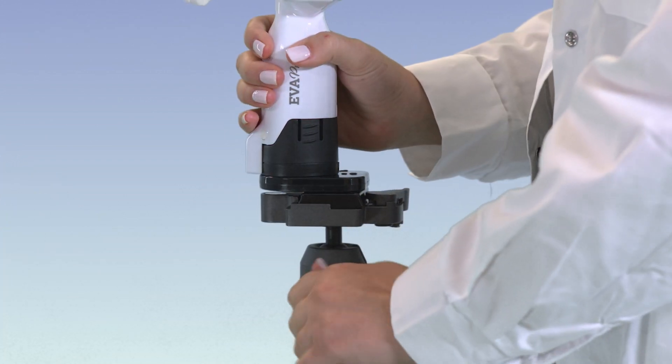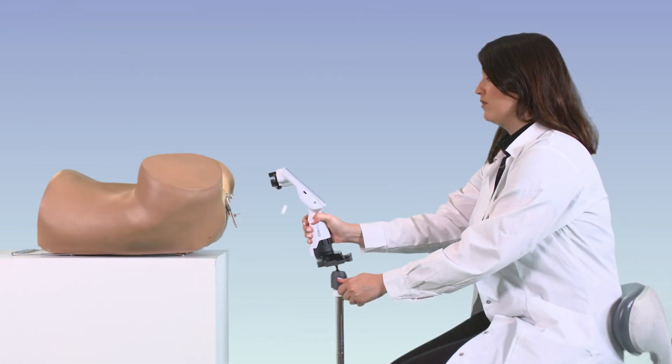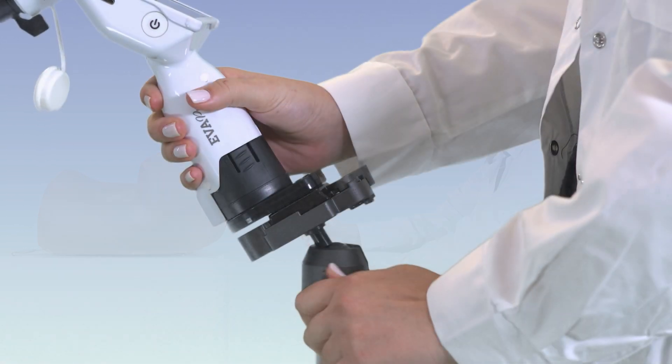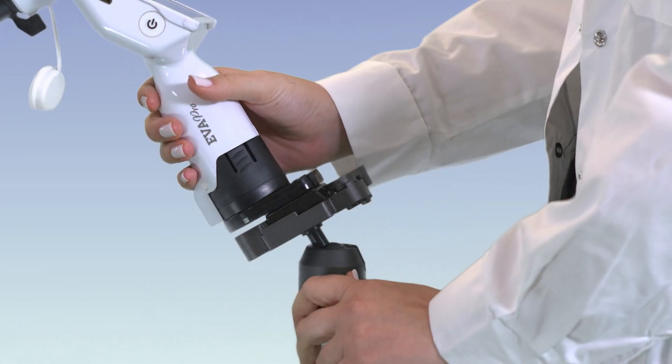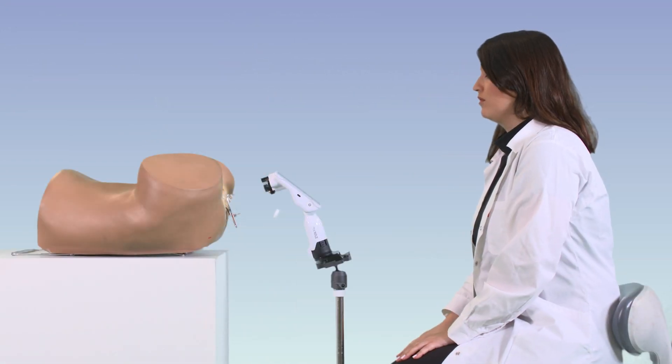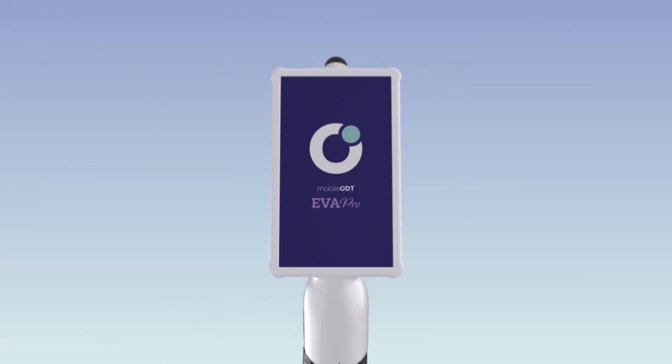Adjust the device position on the stand to achieve the best cervix visibility. Now you are ready to use your EVA-PRO colposcope.